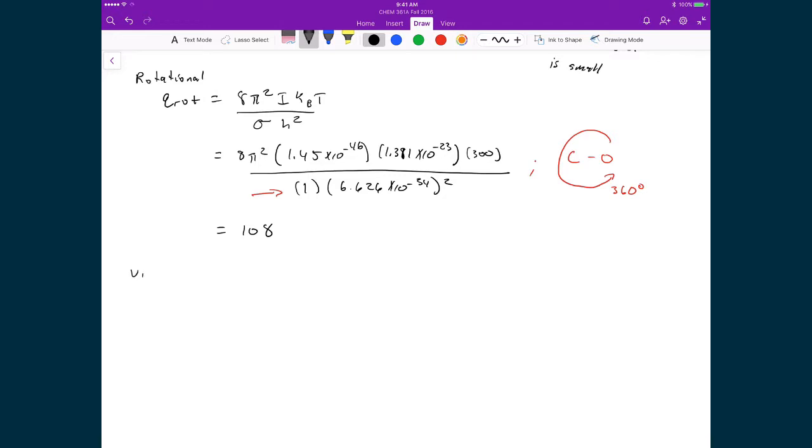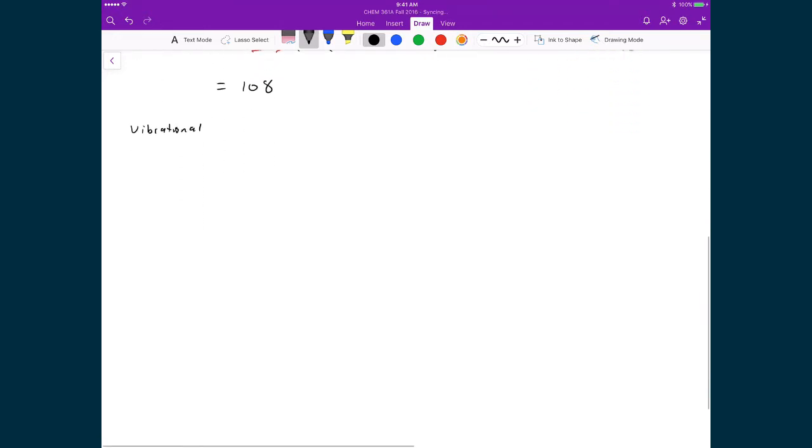The final one is vibrational. In this case, my qvibrational is equal to 1 over 1 minus e to the negative hν over kBT. And so as an aside, let's just calculate the minus hν over kB times T.